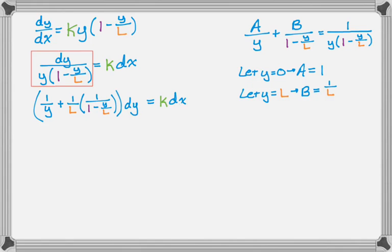A dy equals k dx. Okay, so now I'm going to integrate. The integral of 1 over y is the natural log of the absolute value of y. For this second part here, I actually have to do a substitution, so if I let u equal the denominator, 1 minus y over L, then du is going to be negative 1 over L, so I actually need a negative sign. It's going to be minus the natural log of the absolute value of 1 minus y over L. On the right-hand side, you just integrate, get kx plus C. I always put C on the side with the independent variable, which in this case is x.